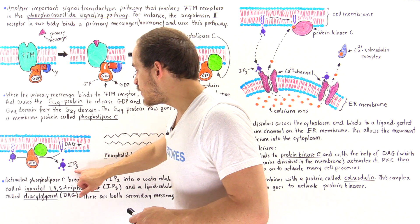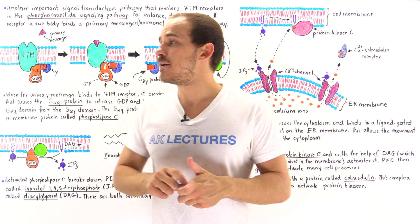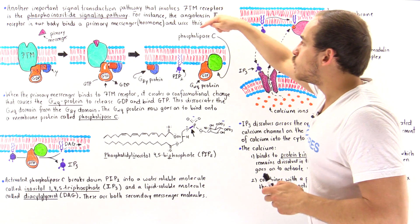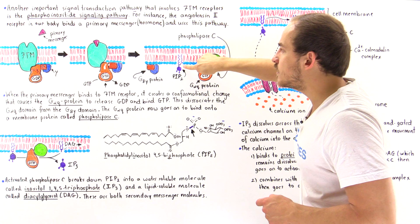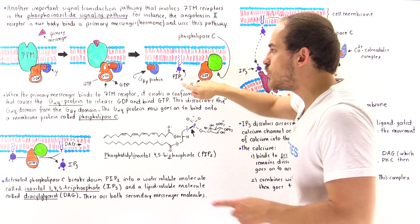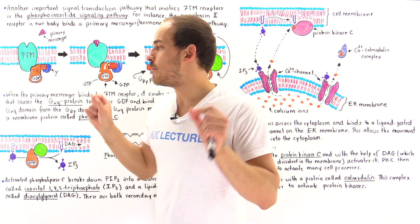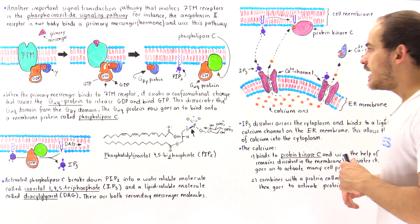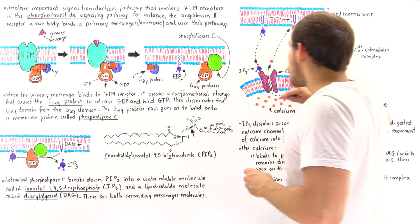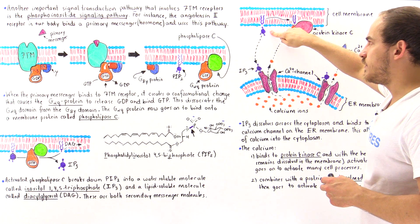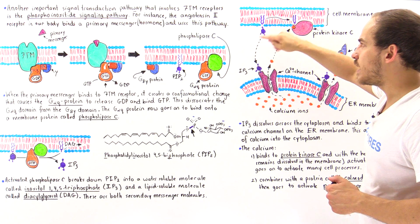The part dissolved in the membrane is known as DAG, which stands for diacylglycerol, while the other part is IP3 — inositol 1,4,5-trisphosphate — which remains dissolved in the cytoplasm. The IP3 and the DAG are actually two types of secondary messenger molecules. So what phospholipase C does is cleave PIP2 to produce two different secondary messenger molecules. Now let's discuss what IP3 does.